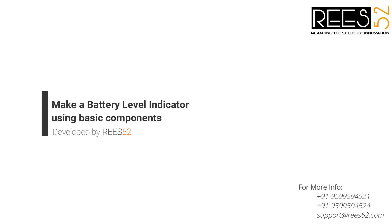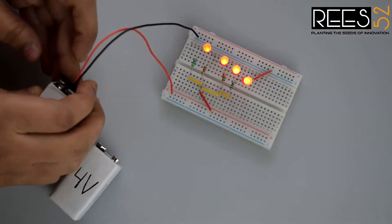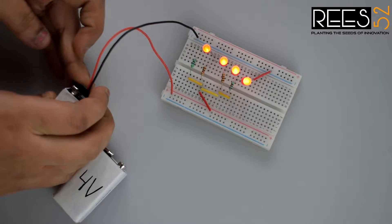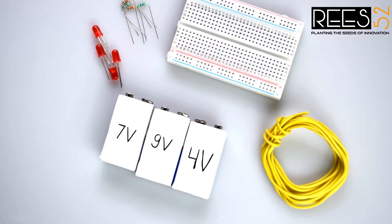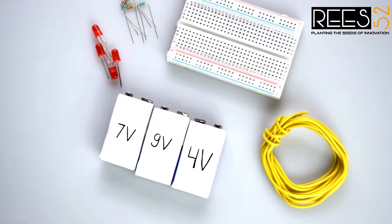Hello everyone, welcome to our channel REES52.com. In today's tutorial we will show you how to design a simple battery level indicator circuit using easily available components like LEDs, resistors, and battery. A battery level indicator indicates the status of battery just by glowing LEDs. For example, three LEDs glowing means battery capacity 60% remains. So let's get started with the circuit.